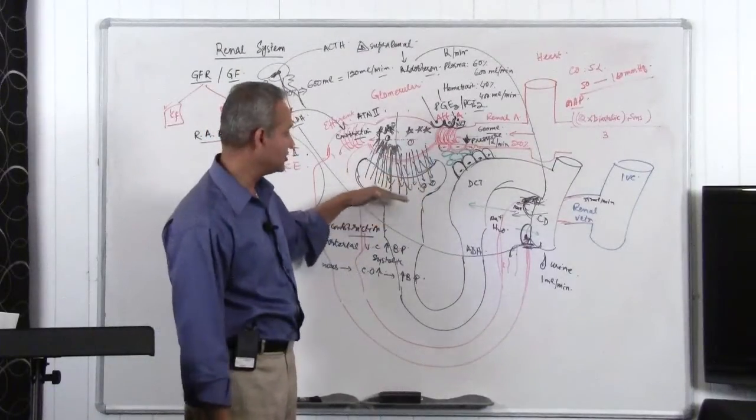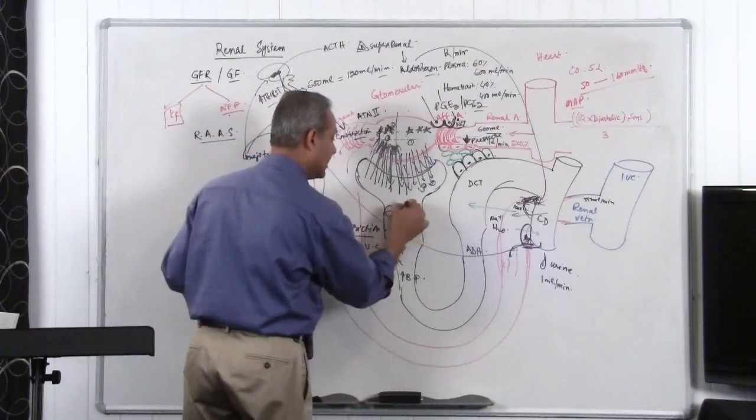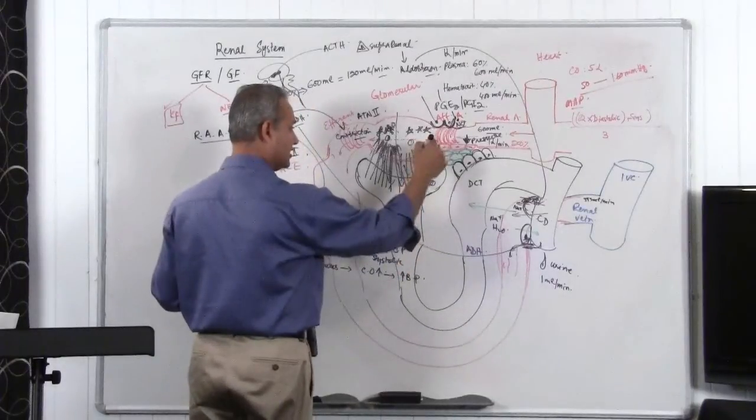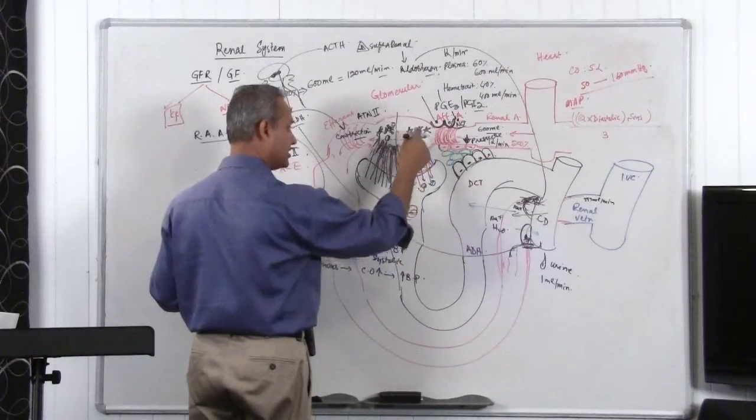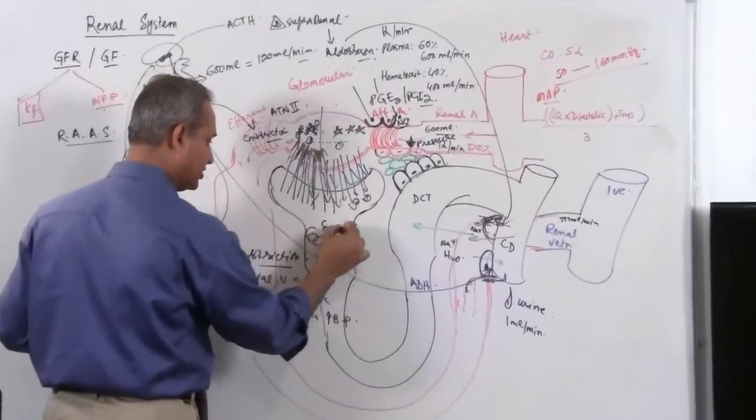Which would reduce the GFR, because what would happen is the damaged casts. Sickle cell does it. Sickle cell, the cells come in here, they are hypoxic, they become sickle, they obstruct the lumen, and they damage the capillaries.